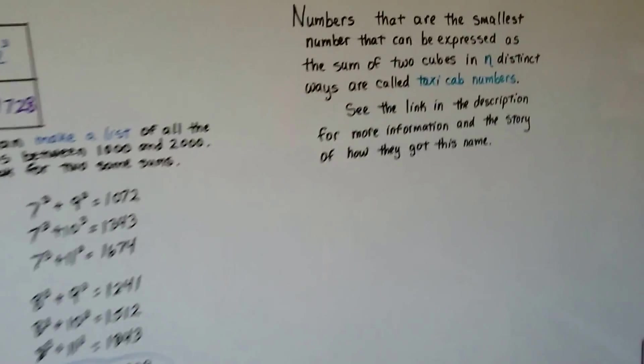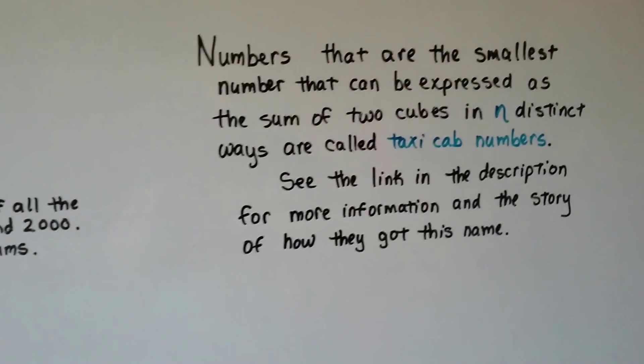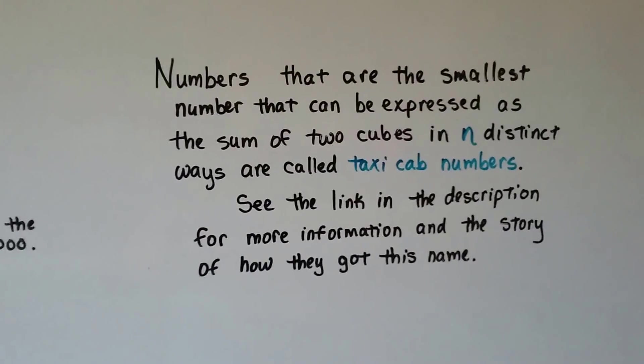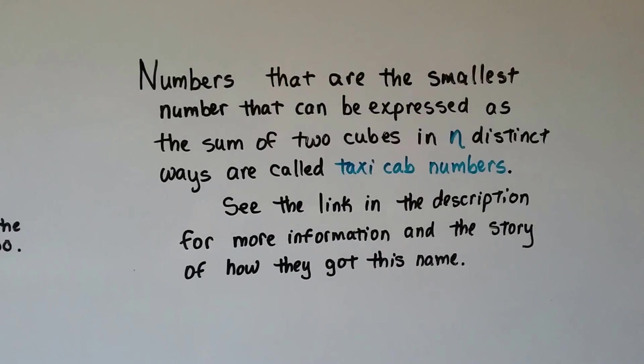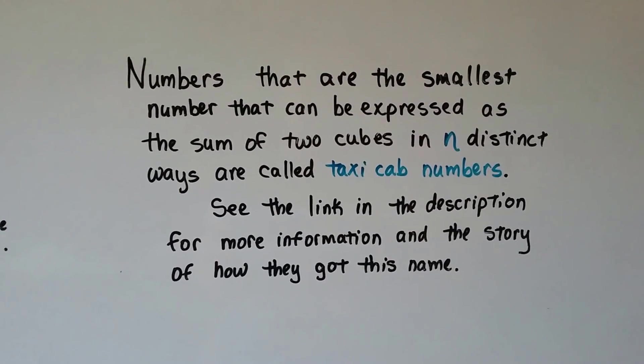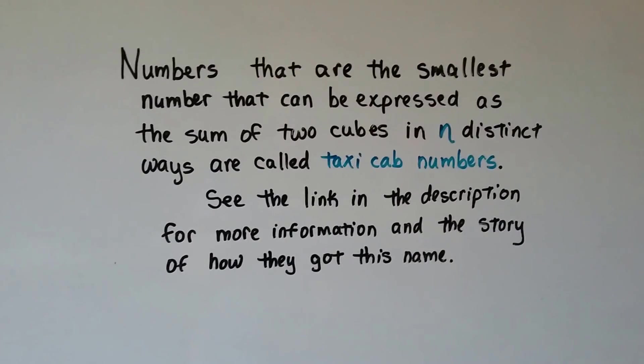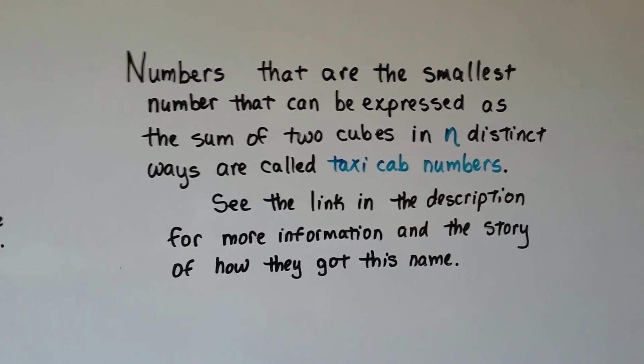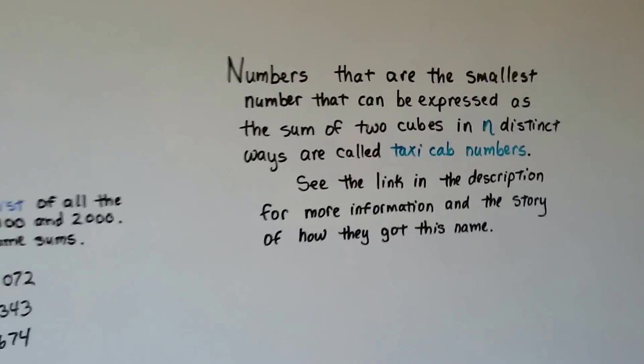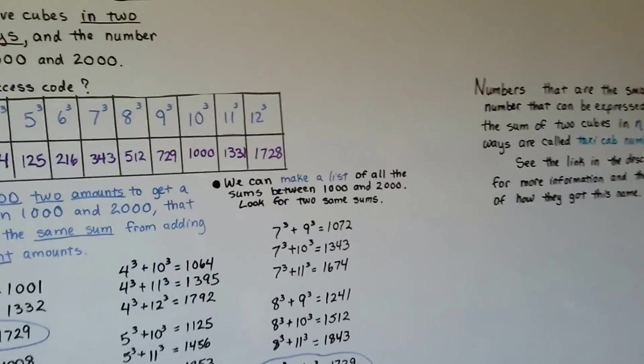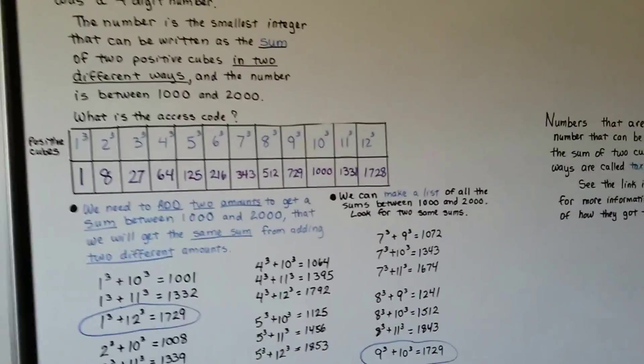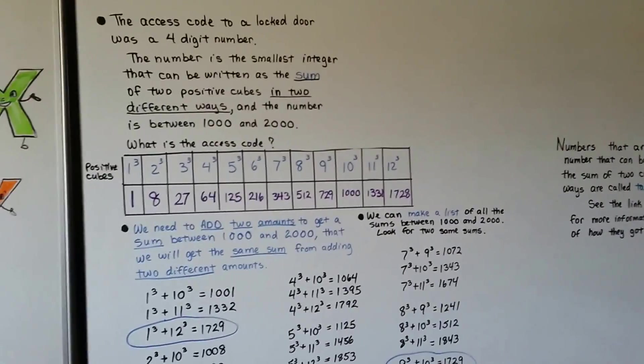Now, numbers that are the smallest number that can be expressed in the sum of two cubes in n distinct ways, they're called taxicab numbers. There's going to be a link in this description for more information and the story of how they got this name. 1729 is actually kind of a popular number.